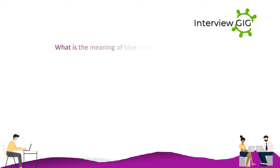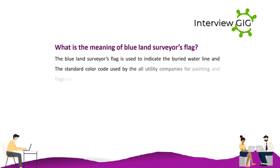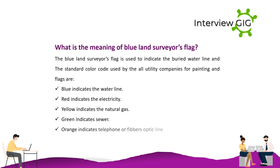What is the meaning of a Blue Land Surveyor's Flag? The Blue Land Surveyor's Flag is used to indicate a buried waterline. The standard color codes used by utility companies for painting and flags are: blue indicates water line, red indicates electricity, yellow indicates natural gas, green indicates sewer, and orange indicates telephone or fiber optic line.